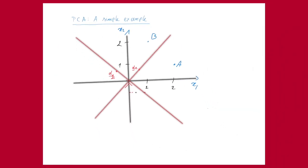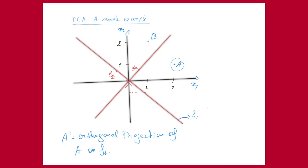The point A prime will be the orthogonal projection of point A on the line F1. An orthogonal projection means I start at A and walk to line F1 in an orthogonal way. I call the other line F2. Since F1 and F2 are orthogonal, going from A to F1 orthogonally means going parallel with F2, ending up at A prime.